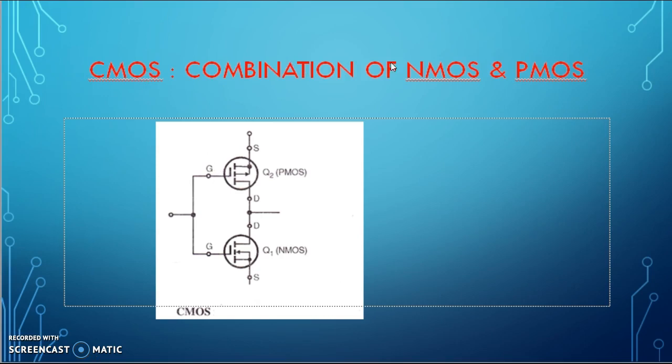CMOS is a combination of NMOS and PMOS. One CMOS is formed by connecting one PMOS and one NMOS together as shown in the diagram. Here two gates are connected together to form one terminal, common gate terminal.